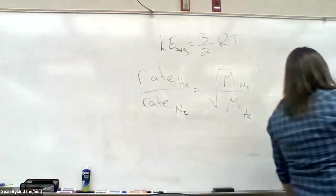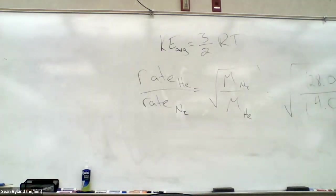What's 28 divided by 4? 7. We're going to take, what's the square root of 7? Something between 2 and 3. 2 squared is 4, 3 squared is 9. So call it like 2.6 or so, 2.7.